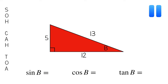Now what about the sine, cosine, and tangent of angle B in this triangle? Feel free to pause. For sine, opposite over hypotenuse — 5 is opposite angle B, so sine of B is 5 over 13. For cosine of angle B, the adjacent leg over the hypotenuse gives 12 over 13. And for tangent of angle B — TOA, opposite over adjacent — that's 5 over 12.